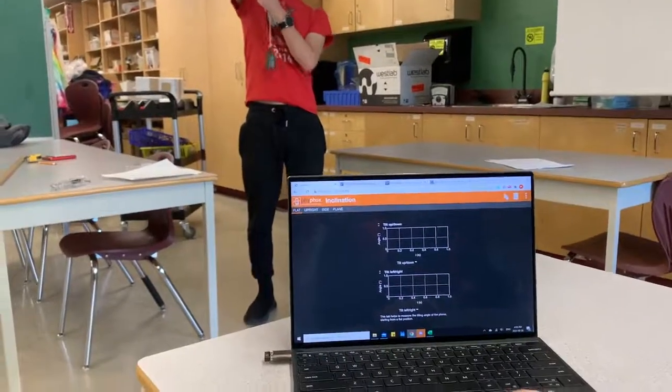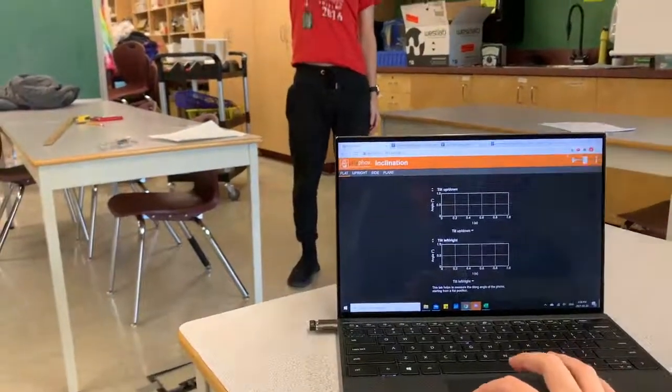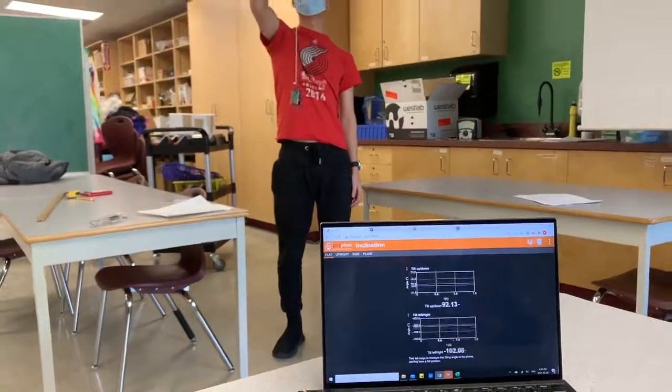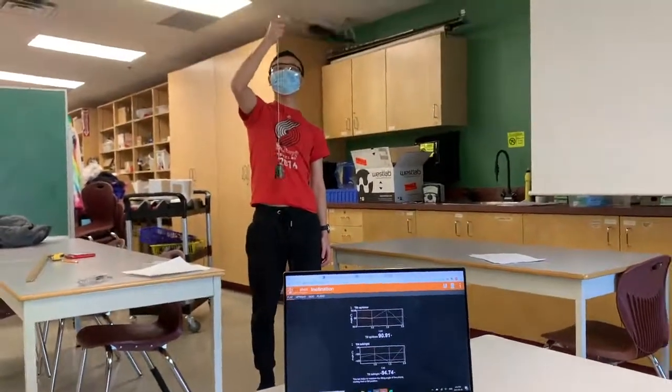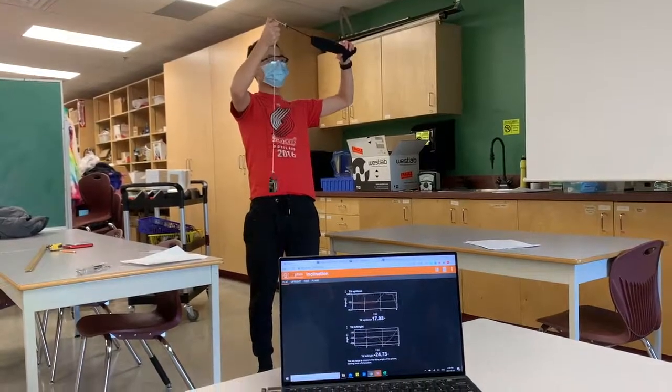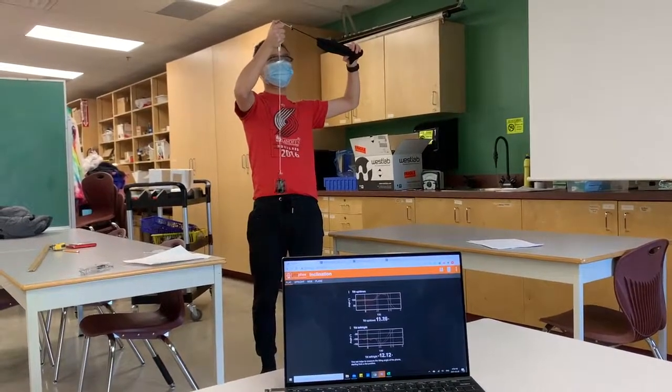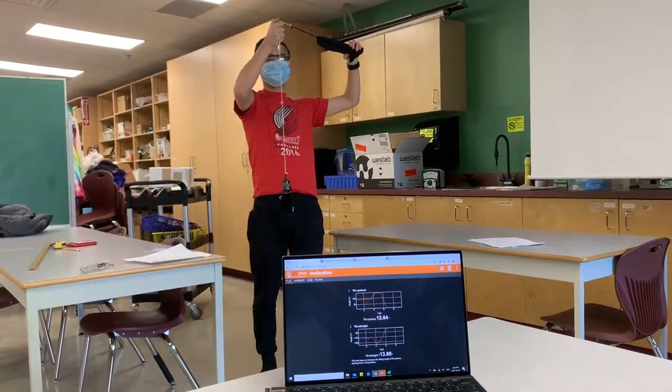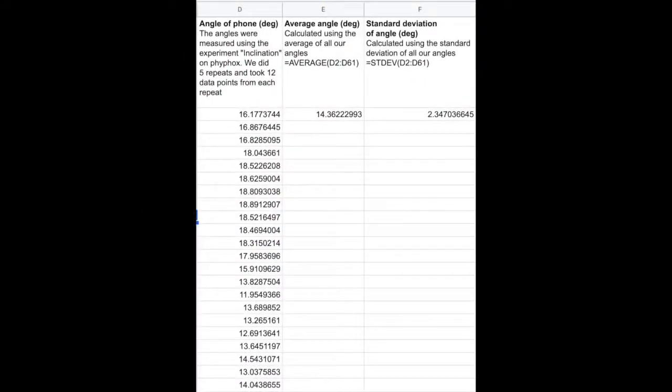To find the angle, we used inclination on PhyPhox. However, PhyPhox is inaccurate at finding the angle while the phone is rotating, so we had to catch the phone out of the air, then flip it so the phone was facing up. We recorded 12 angles, then repeated the catch 5 times. We then found the average angle, then used the standard deviation for our uncertainty.